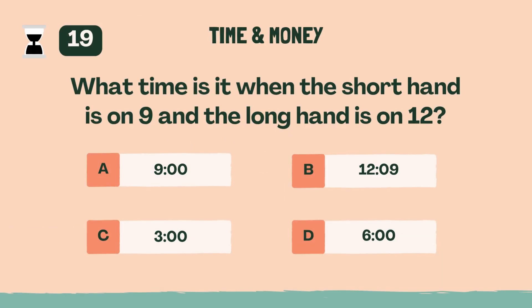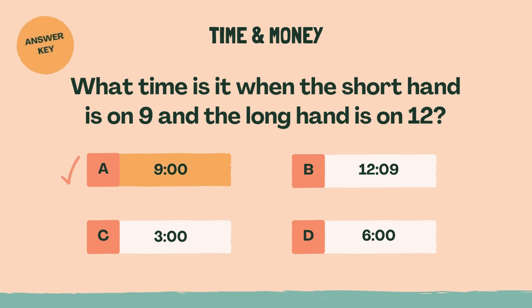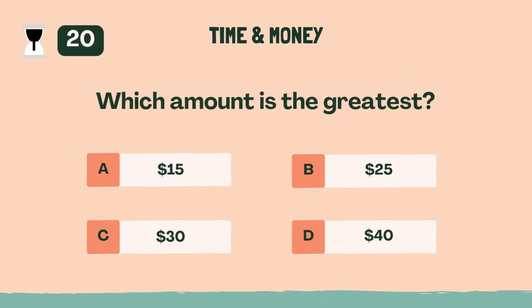Category 3: Time and Money. 3, 2, 1, go. What time is it when the short hand is on 9 and the long hand is on 12? A, 9 o'clock.